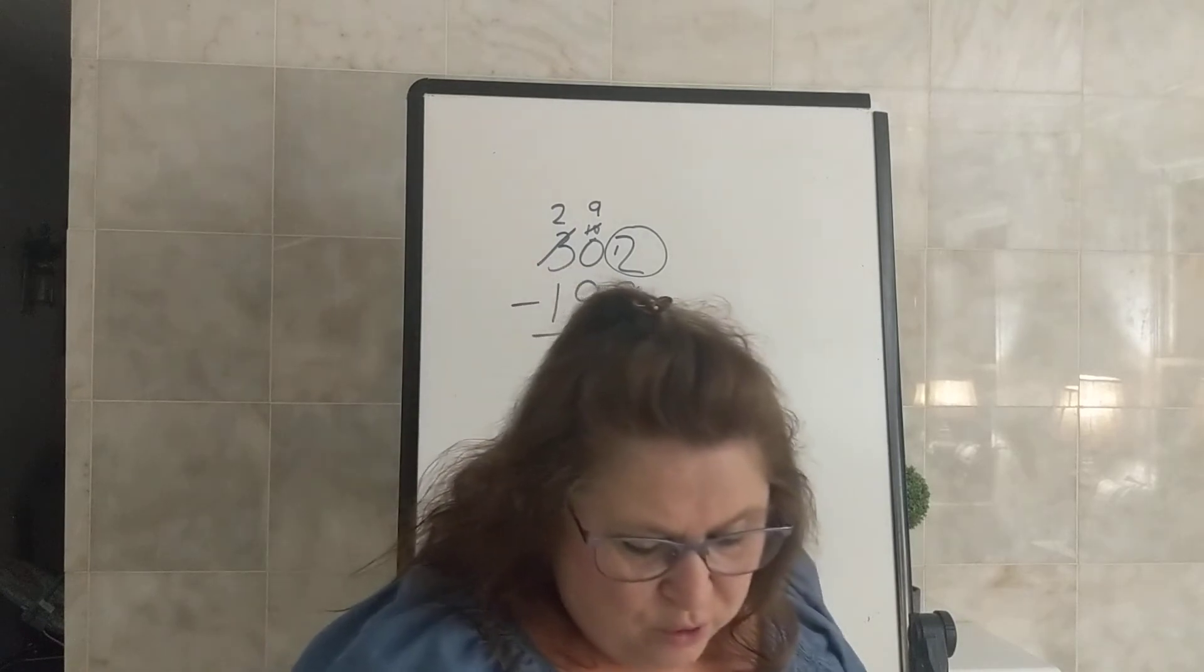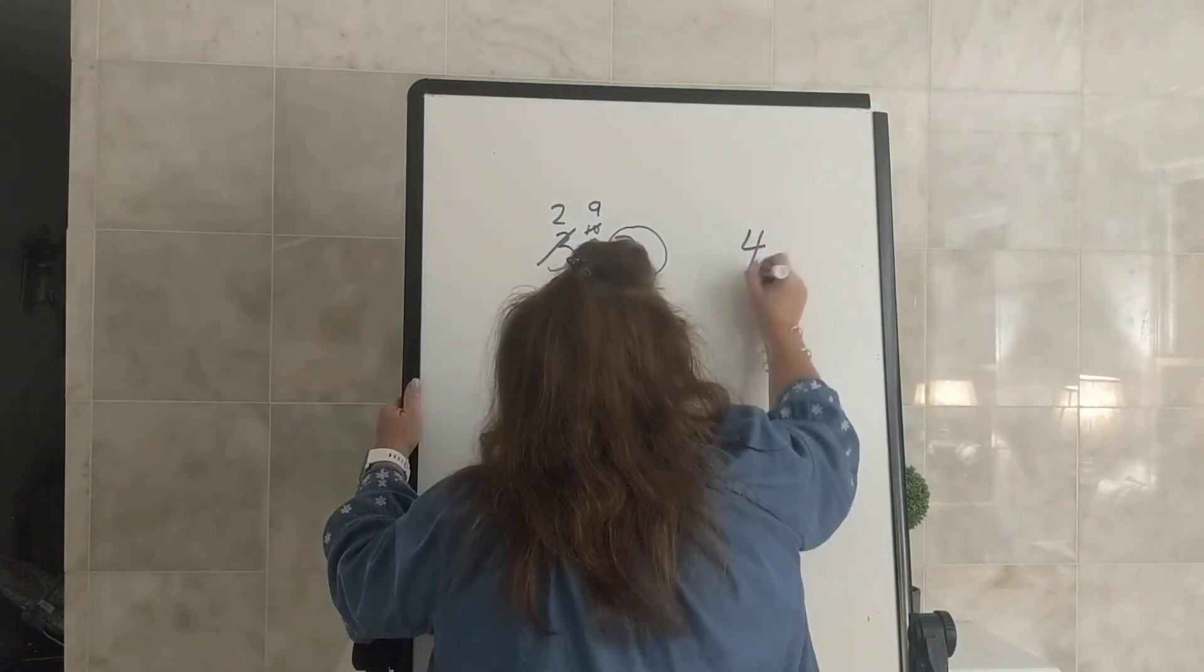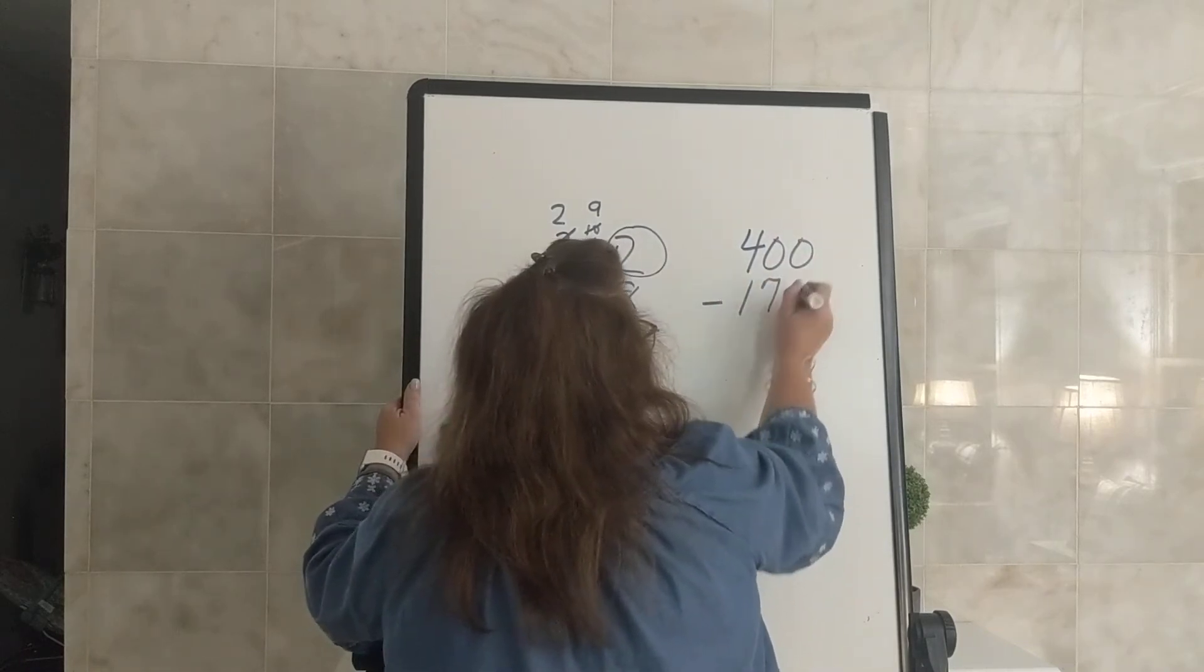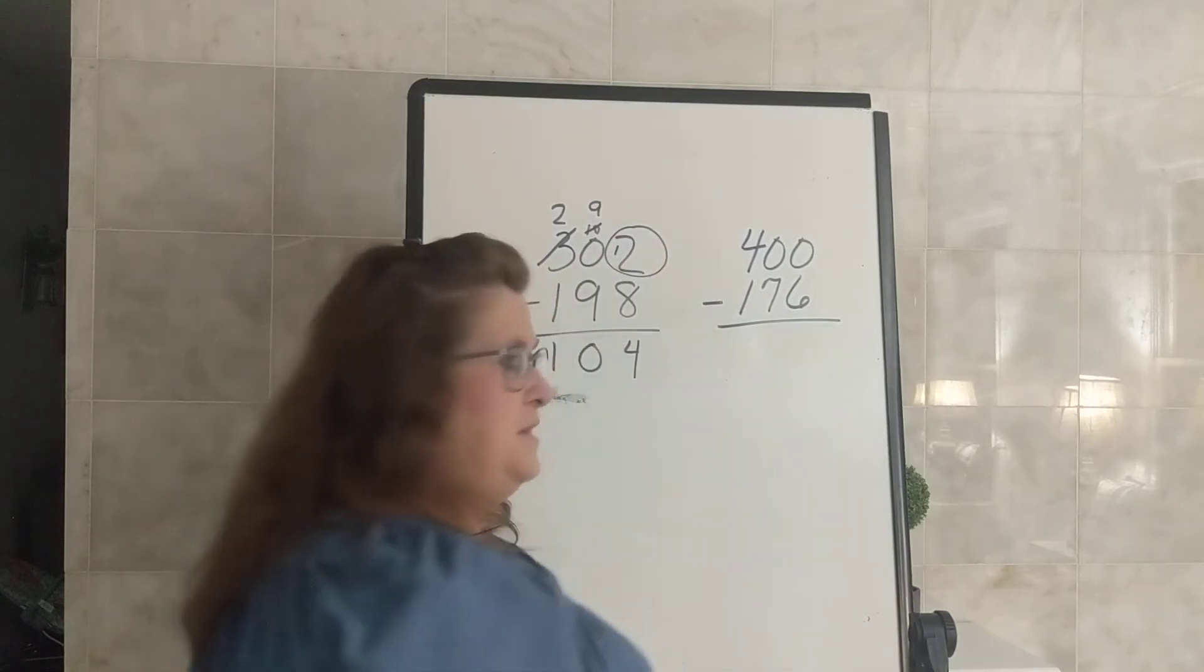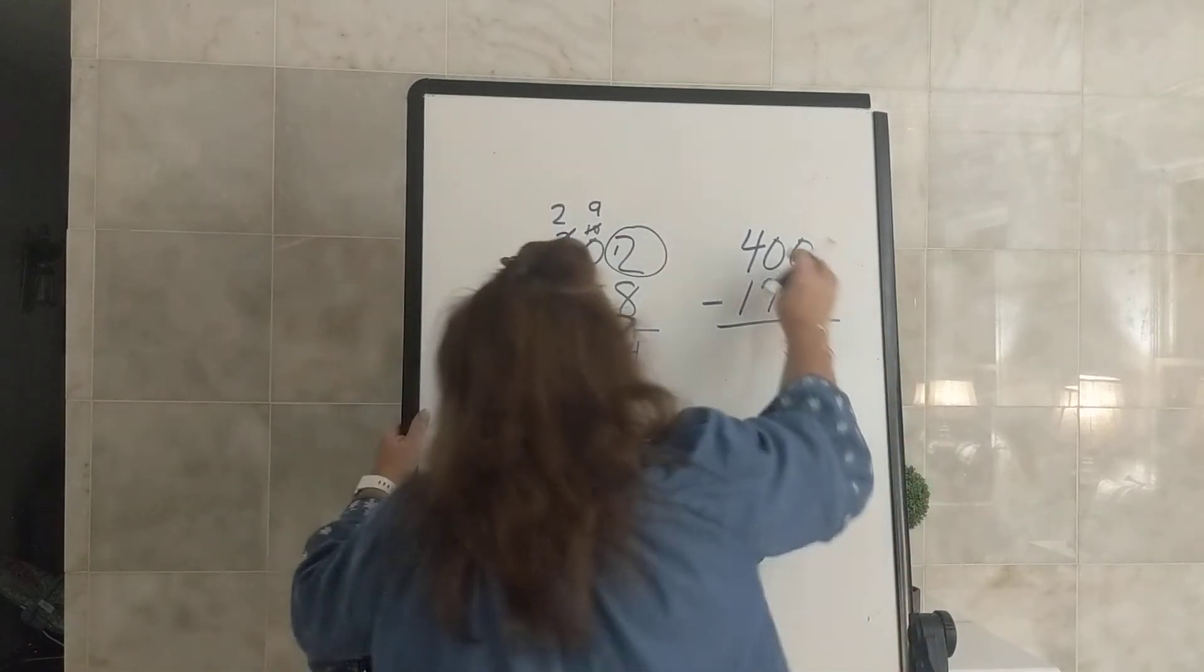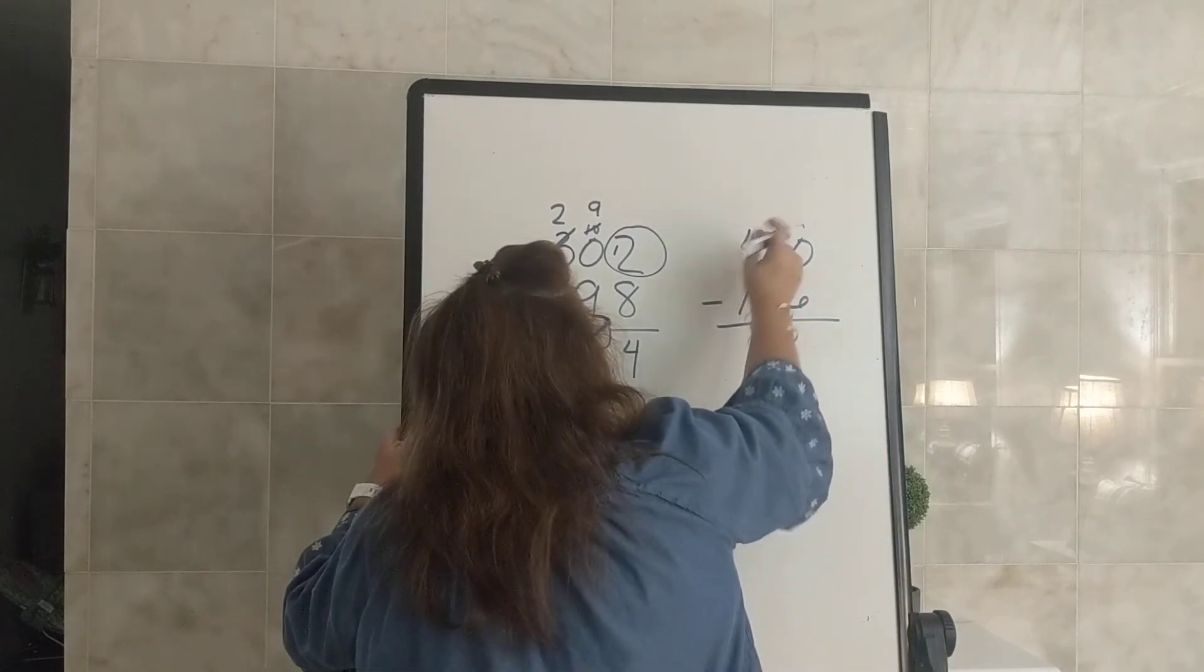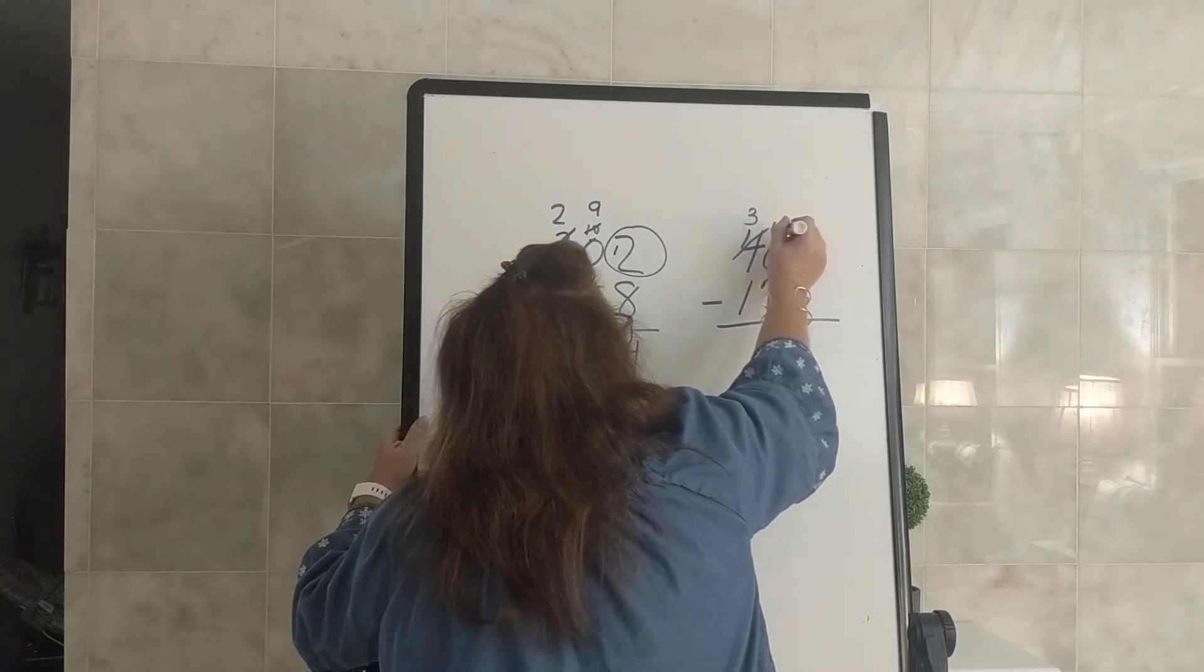And then in section 4, look at letter D. We have 400 minus 176. Can we say 0 minus 6? No. So we go next door to borrow. He doesn't have anything, so he's going to borrow from 4. So 4 becomes 3, our 1 comes over here with this 0. Now there's 10.